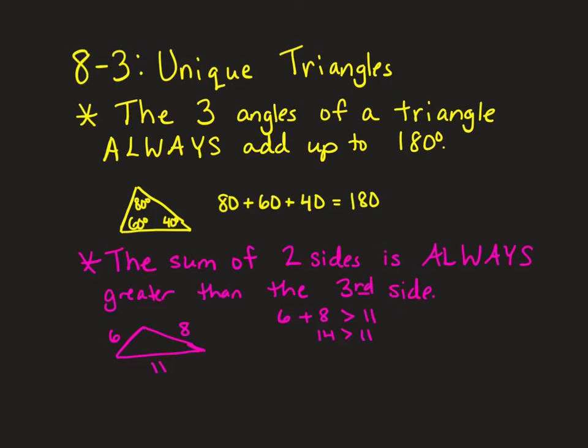I could take any other two sides. I could use 6 and 11. If I add them together, it's got to be greater than 8, and it is. So no matter what two sides I choose, it's got to be greater than the third side when you add them together. That is always true of a triangle.